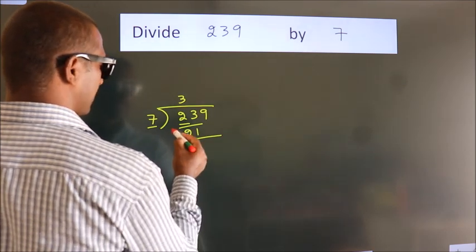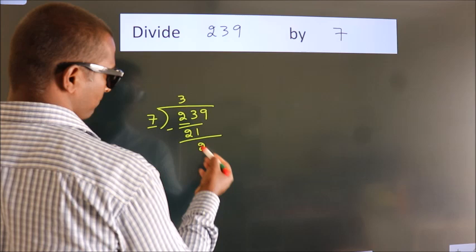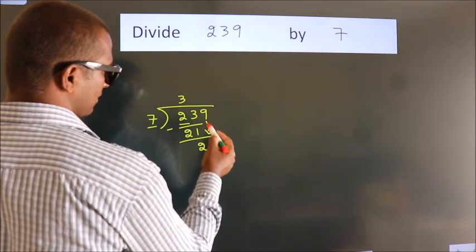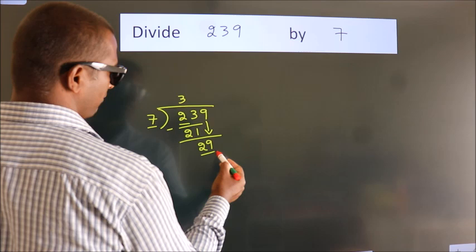Now we should subtract. We get 2. After this, bring down the beside number. So 9 down. So 29.